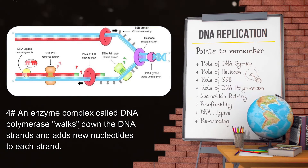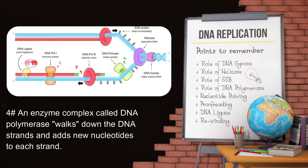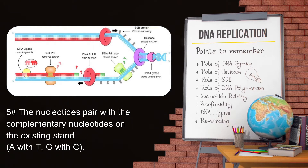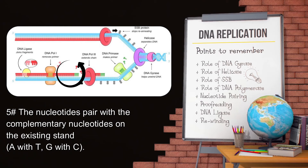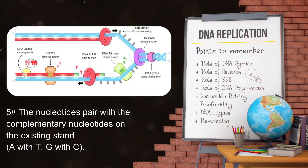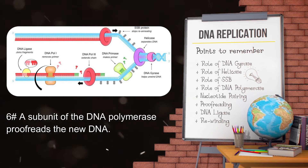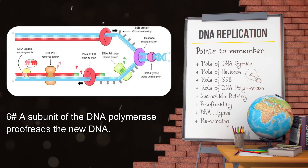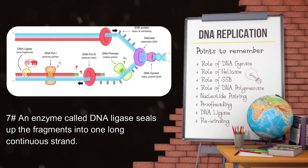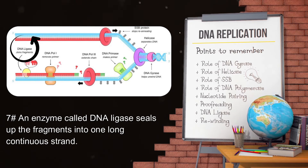Step four: an enzyme complex called DNA polymerase walks down the DNA strand and adds new nucleotides to each strand. Step five: the nucleotides pair with the complementary nucleotides on the existing strand — A with T and G with C. Step six: a subunit of DNA polymerase proofreads the new DNA.